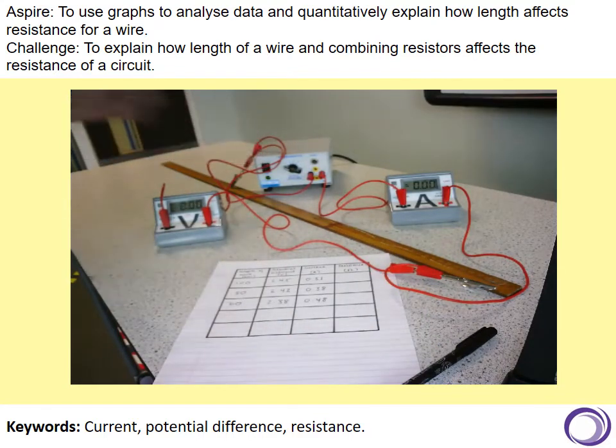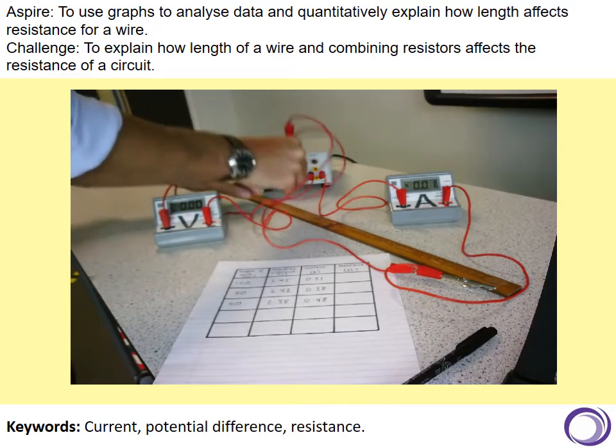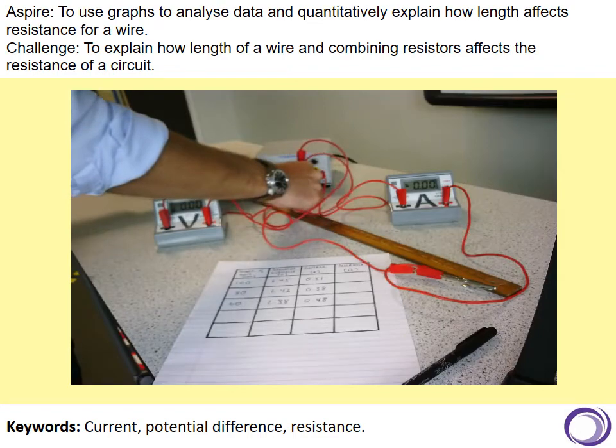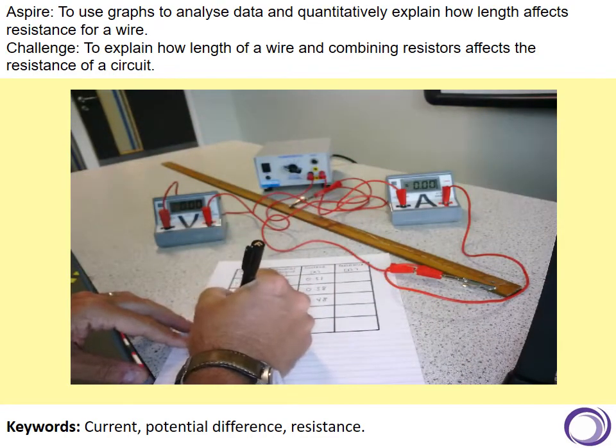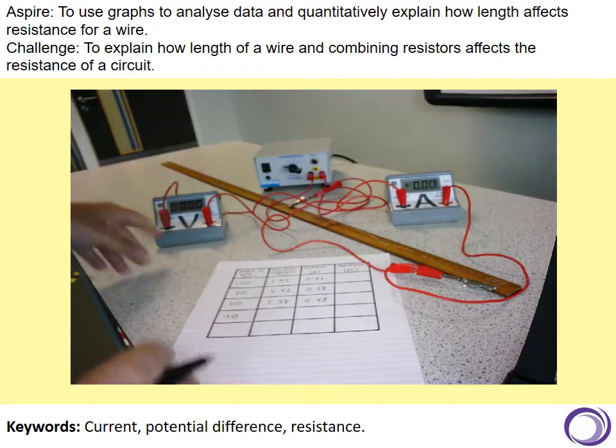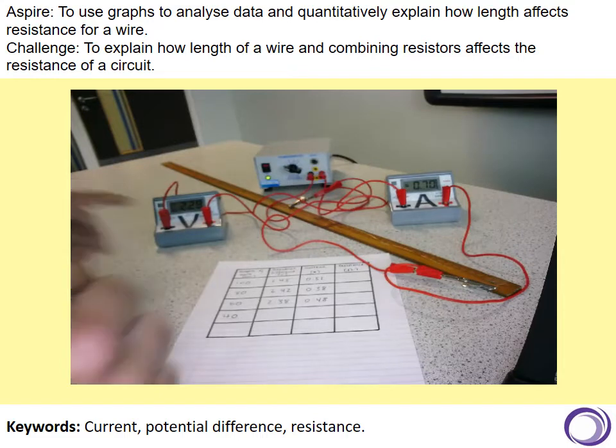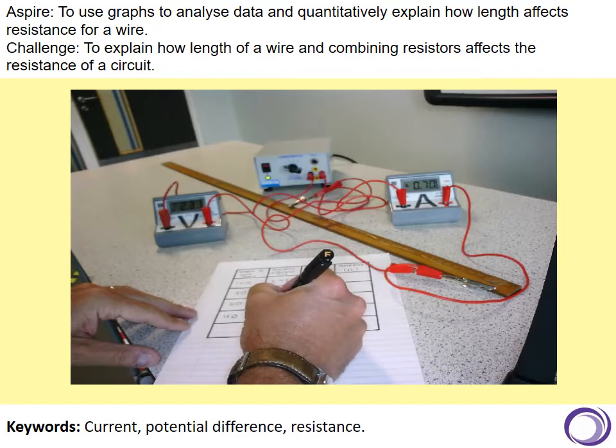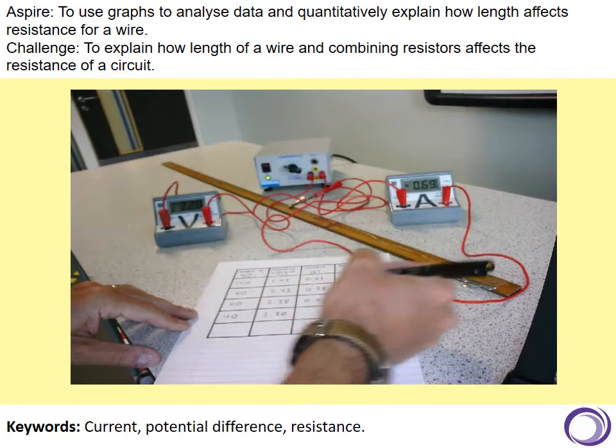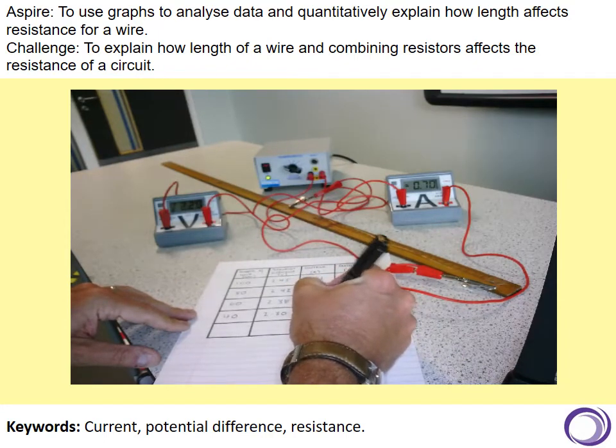We turn the power pack off, and we move the crocodile clips another 20 centimeters down to 40 centimeters. We'll then take the power pack off, and we turn the power pack off, and then we go to 30. So, for voltage, we've got a reading of 2.30, just let it settle, and then we've got a current reading of 0.70.